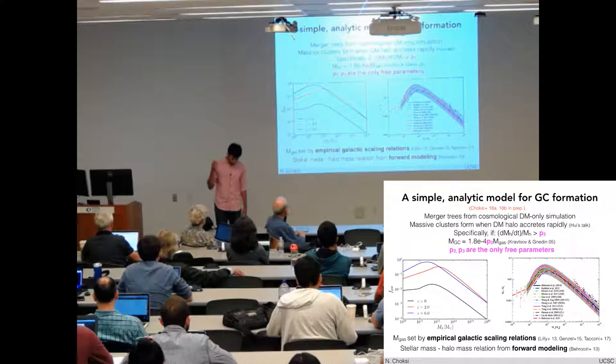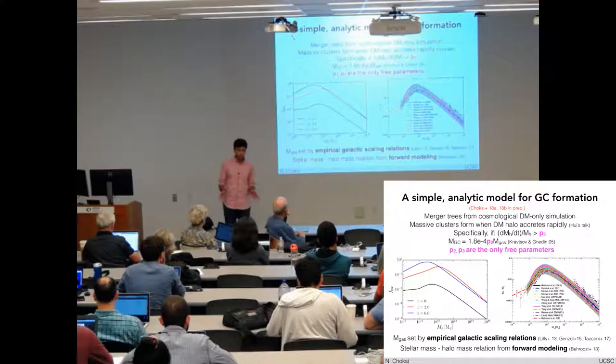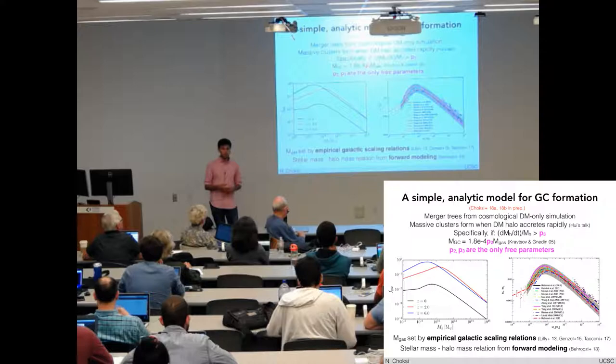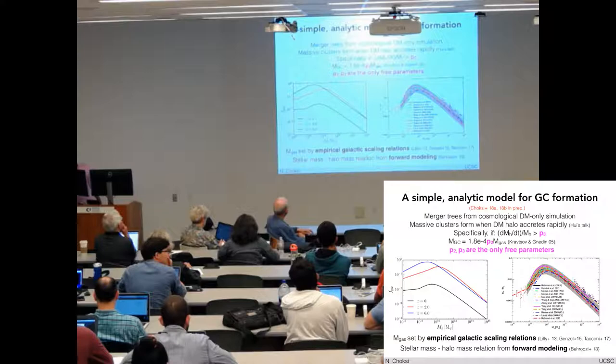We just assume that the total mass that forms in globulars at one of these epochs just scales linearly with the cold gas mass in the galaxy. The cold gas mass just comes from empirical scaling relations. We mostly use data from Reinhardt's group and parameterize the cold gas mass just as a function of stellar mass and redshift. From there, the stellar mass just comes from Peter's stellar mass halo mass relation, 2013, not 2018. Haven't had time to update it.